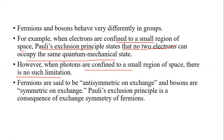Fermions are said to be anti-symmetric on exchange, and Bosons are symmetric on exchange. The wavefunction operation gives psi minus psi-star for anti-symmetric (Fermions) and psi plus psi-star for symmetric (Bosons). The Pauli exclusion principle is a consequence of the exchange anti-symmetry of Fermions.